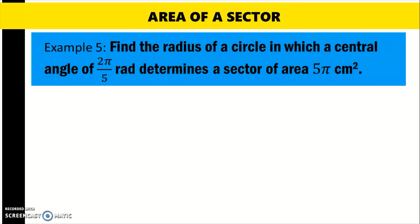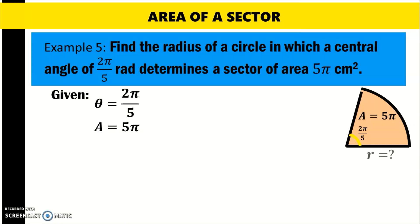Example number 5: Find the radius of a circle in which a central angle of 2 pi over 5 radians determines a sector of area 5 pi square centimeters. The given are the central angle and the area of the sector, and what is unknown is the radius. So theta is 2 pi over 5 and the area is 5 pi. We are asked for the radius of the circle.